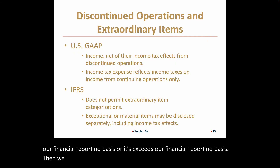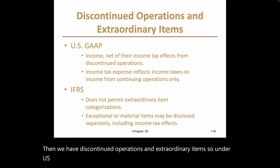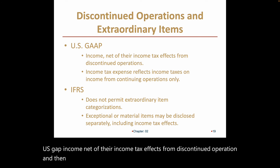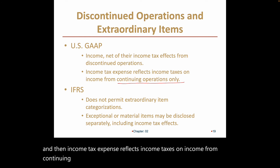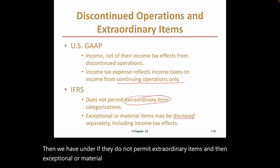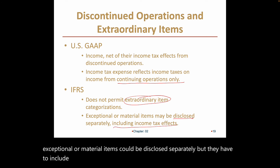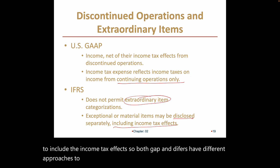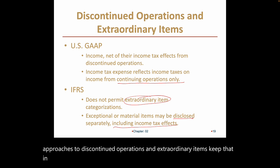For discontinued operations and extraordinary items: under US GAAP, income from discontinued operations is reported net of income tax effects, and income tax expense reflects taxes on continuing operations only. Under IFRS, extraordinary items are not permitted; exceptional or material items may be disclosed separately but must include income tax effects. Both GAAP and IFRS have different approaches here — keep that in mind based on the company you are analyzing.